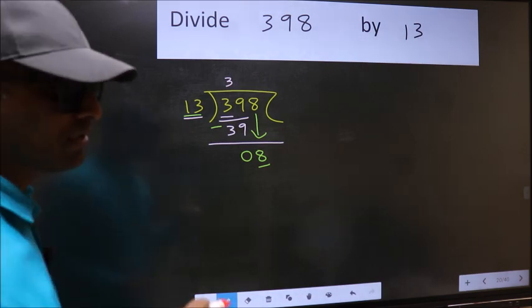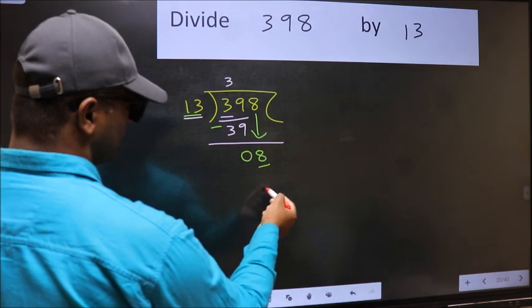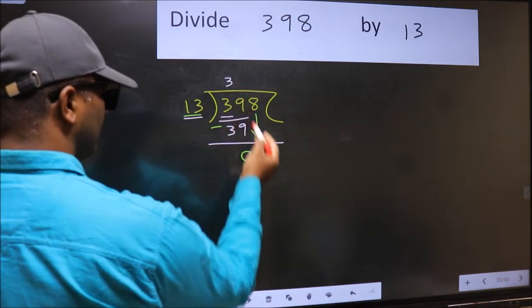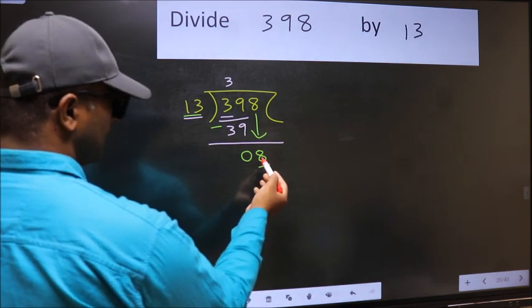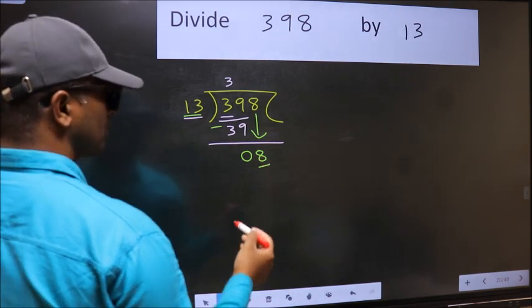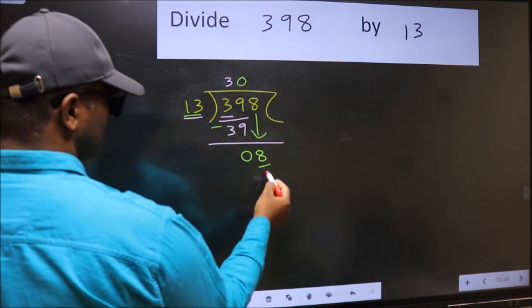Instead, what you should think of doing is: which number should we take here? If I take 1, we will get 13. But 13 is larger than 8, so what we should do is we should take 0. So 13 into 0, 0.